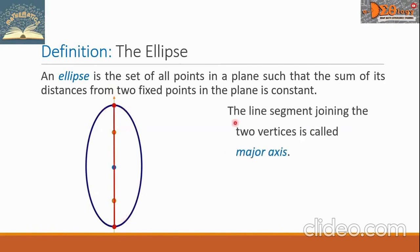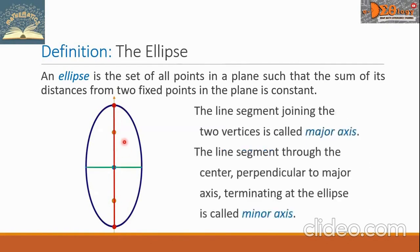The line segment joining the two vertices is called the major axis. This line segment in red is the major axis. The line segment perpendicular to the major axis, terminating at the ellipse, is called the minor axis. This line segment in green is the minor axis.